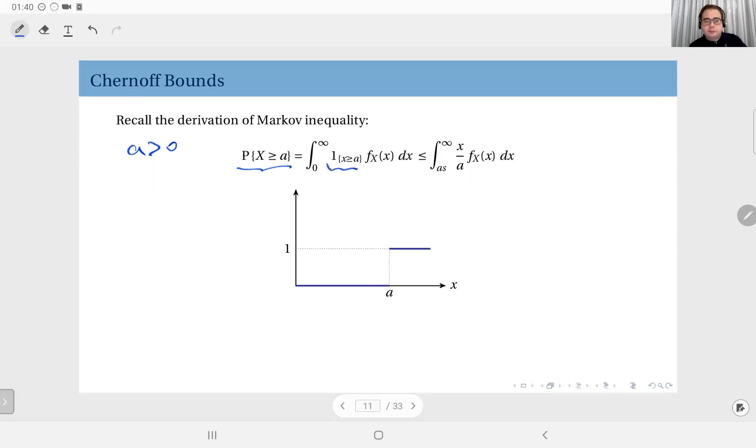This is the indicator function. Now, this probability, we can write this as the integral from A to infinity, the PDF gives me this probability. But instead of writing the integral from A to infinity, I can write it as a sum from 0 to A, 0 times the PDF dx plus from A to infinity, 1 times the PDF dx. And this here is the indicator function, the indicator function for X greater than or equal to A.